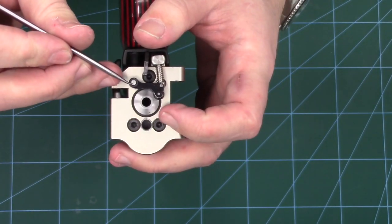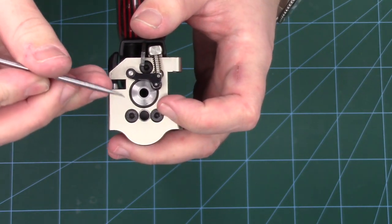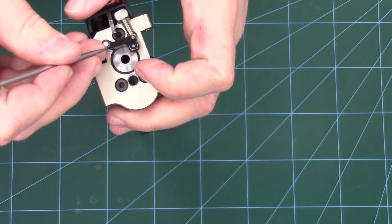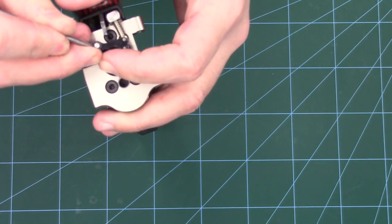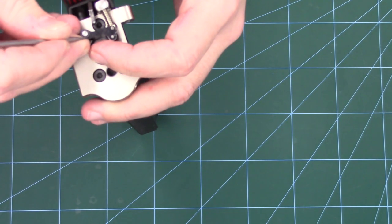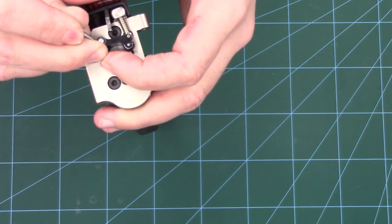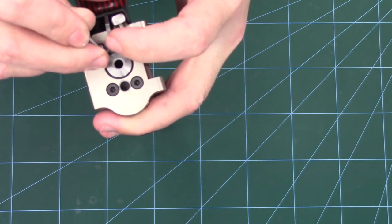So we need to remove this little circlip on the end here, and I'd like to do that with a sharp pointy thing. So just poke in one of the holes or one of the slots in the circlip and then just lever it off.